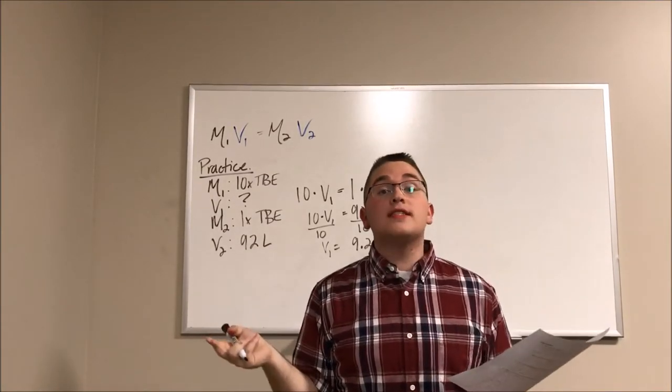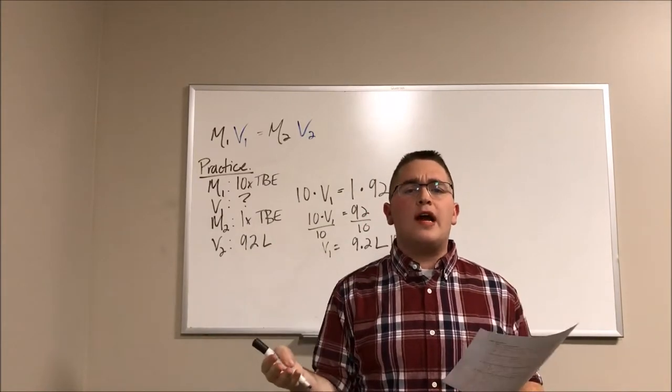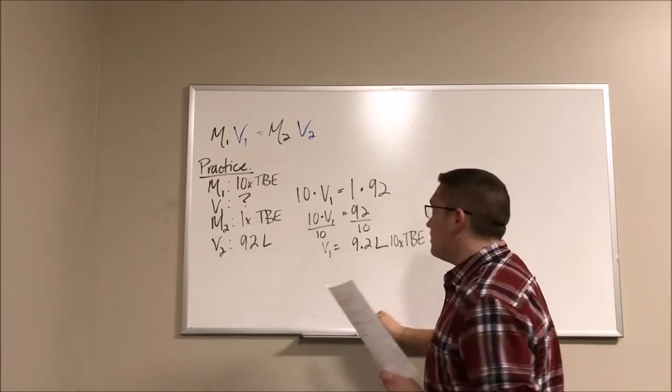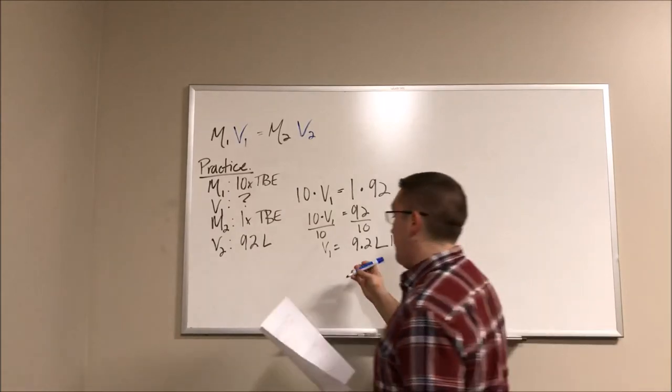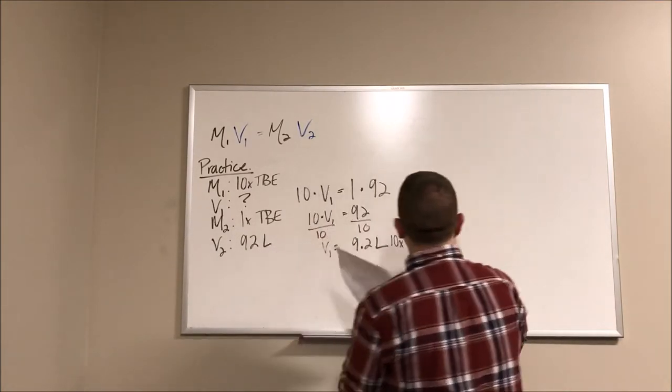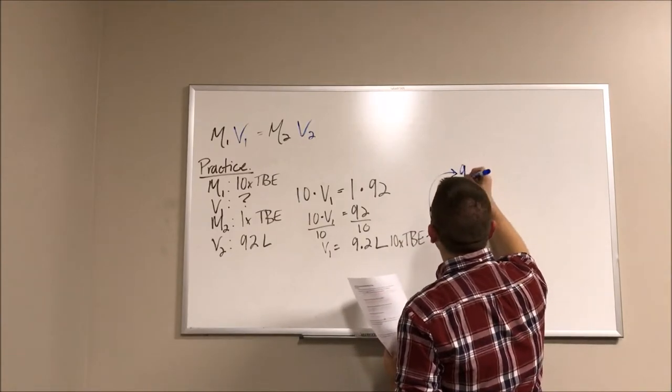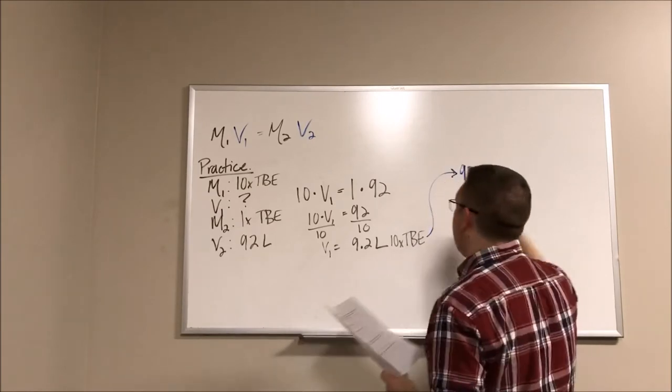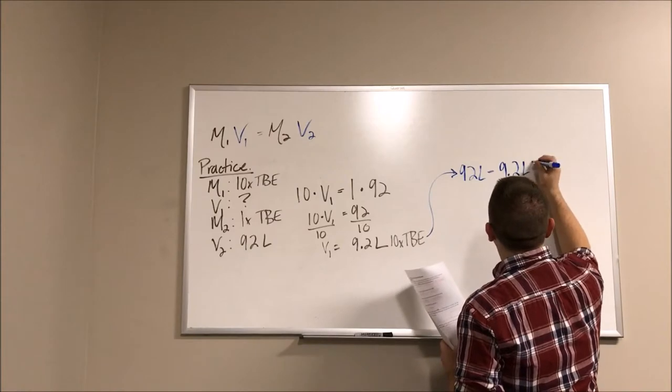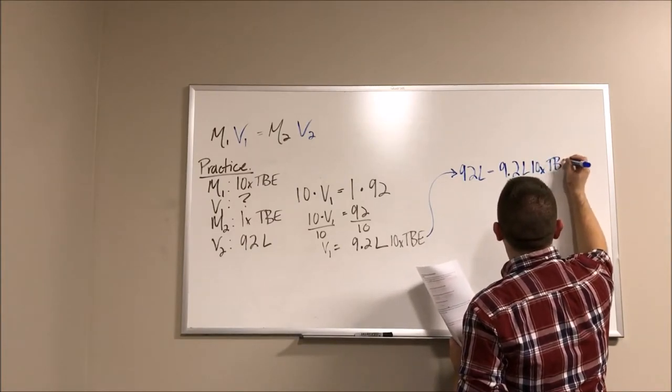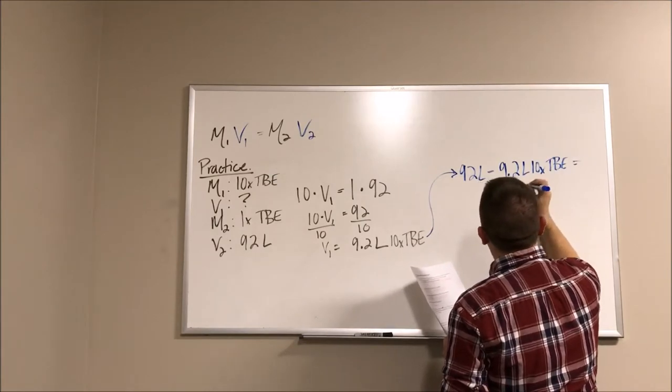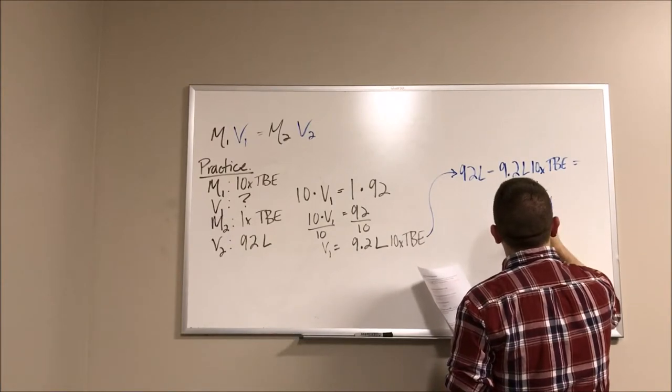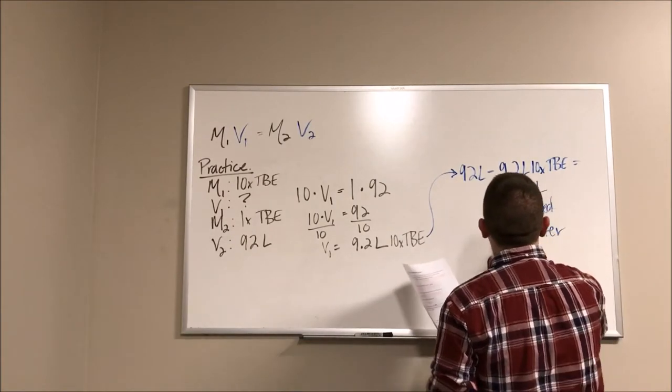But we're not done yet. The problem wants us to communicate to Brent how many liters of distilled water he's going to need. So we know that he wants to end up with 92 liters in the end. So we take this for step number two. We want to end with 92 liters. And we know that 9.2 of those 92 liters are going to need to be buffer. So this is going to get us 82.8 liters of distilled water.